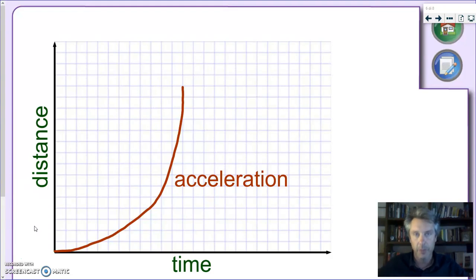Acceleration can be positive, it can be negative. But in all cases, we know that it means that we have a line that doesn't have a constant slope. It's not a straight line. So, any curved line, like this one, represents an acceleration.